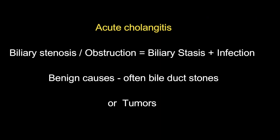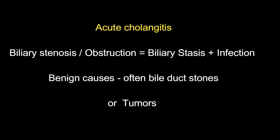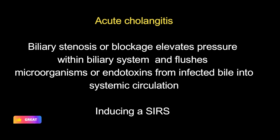Coming to acute cholangitis: any biliary obstruction or stenosis will lead to biliary stasis. Bile is a good culture medium, and especially in the presence of stones it leads to secondary infection. So biliary stasis plus infection is the cause of acute cholangitis. The benign causes of obstruction are usually bile duct stones, tumors, or — as in the present index case — a broken CBD stent with concretion. The biliary blockage leads to elevation of intra-biliary pressure, flushing microorganisms or endotoxins from infected bile into systemic circulation, inducing a surge leading to fever with chills.